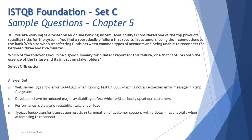Option B says: developers have introduced a major availability defect which will seriously upset our customers. This directly contradicts a principle from chapter 1 — you should not point fingers at developers or create conflict. The focus should be on the product, not the people. The summary does not provide developers or managers with the necessary information, and it attacks developers directly, which is not a protocol we should follow from the psychology of testing.